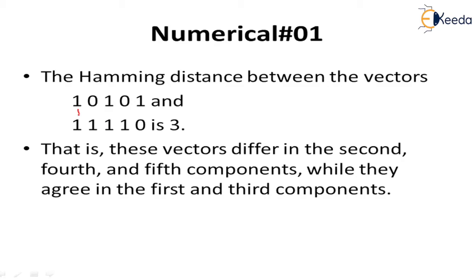This 1 remains as it is. 0 is converted to 1, so you can say that's 1 change. This remains as it is. This is going to be changed. And this 1 is converted to 0, this is again a change. So we performed 3 different changes between these 2 strings or 2 vectors.